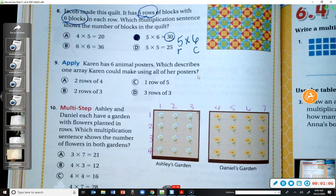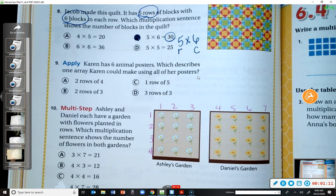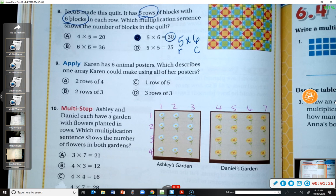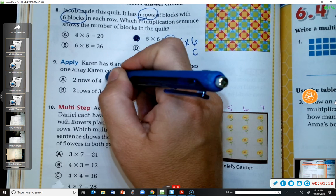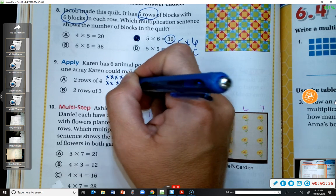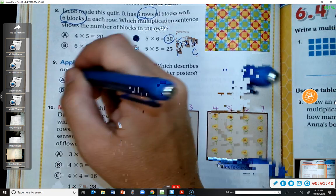Okay. Number nine, Karen has six animal posters, which describes one array Karen could make using all of her posters. Okay. She has six animal posters. Which array would make six as your total? Would two rows of four make six posters? Well, let's see. If I make two rows with four in each row, does that equal six? No, that equals eight. So it can't be A.